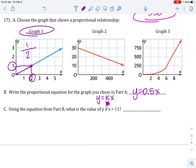Using the equation from part B, what is the value if x is 11? So, what you're doing is you're just taking your unit rate and multiplying by 11 to get 5.5.